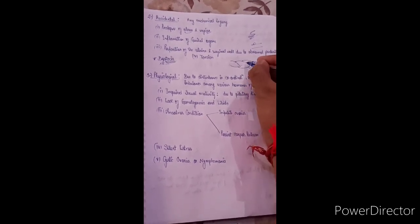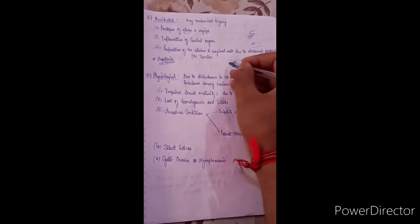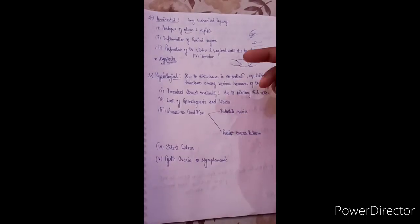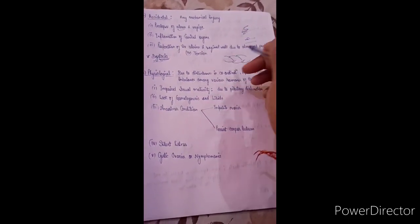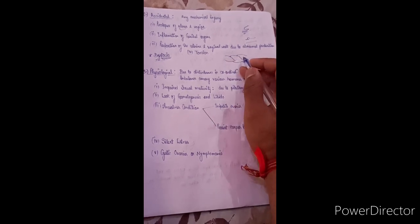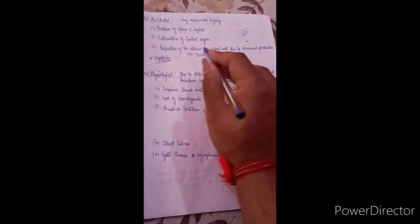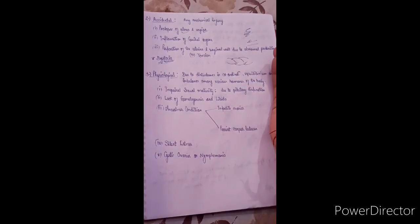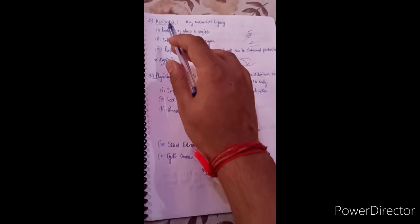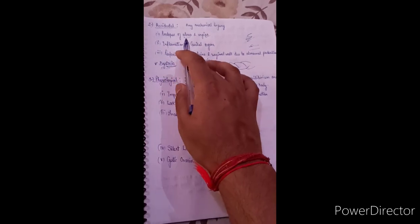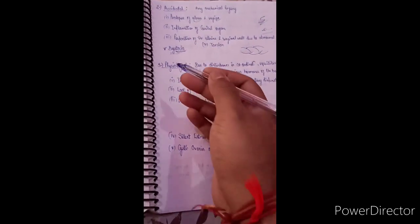Another accidental cause is uterine or vaginal torsion. Normally, all reproductive organs are properly canalized. But sometimes twisting occurs in the vaginal tract through which the fetus must pass. Due to this torsion, the tract becomes obstructed, which increases the chances of fetal or calf death. These are some important accidental causes of sterility.